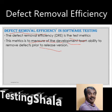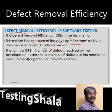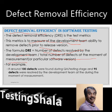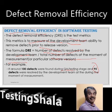The formula for defect removal efficiency is: number of defects resolved by the development team divided by the total number of defects at that particular moment. For example, if around 100 defects were found during the QA testing stage, and 95 defects were resolved by the development team at the moment of measurement,